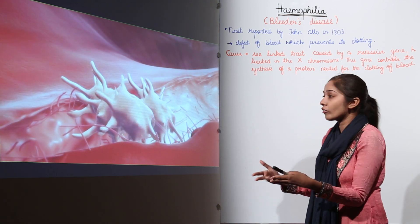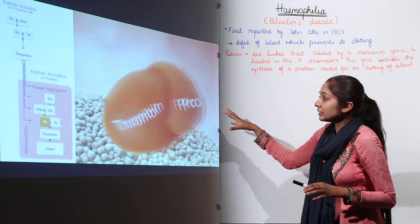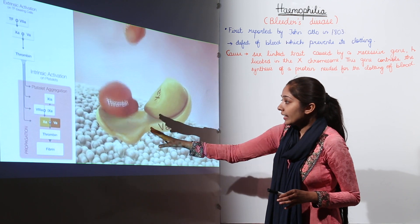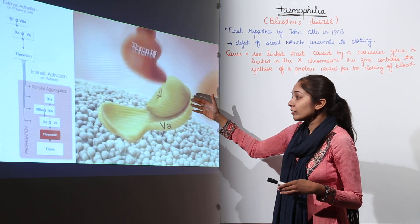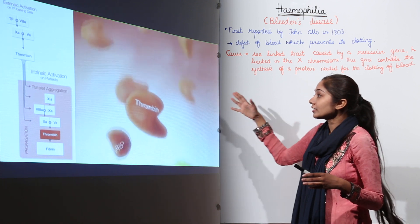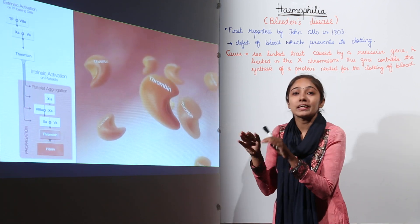They are very important for blood clotting. So initially what happens? Clotting factor 10 and 5, they activate thrombin and then thrombin activates fibrin. So this is how the clotting takes place in our human body.